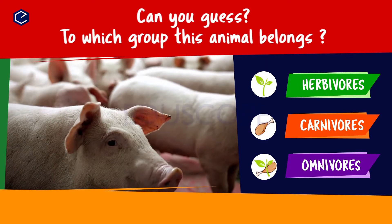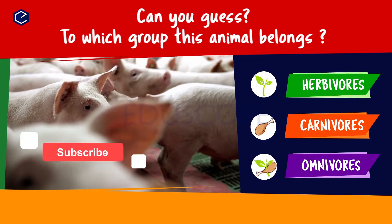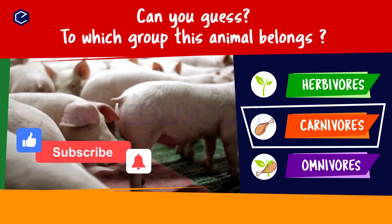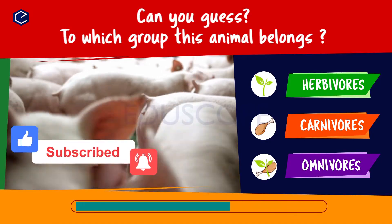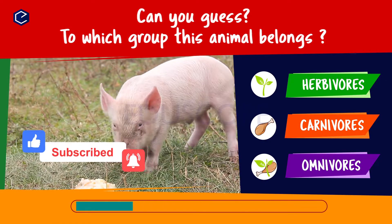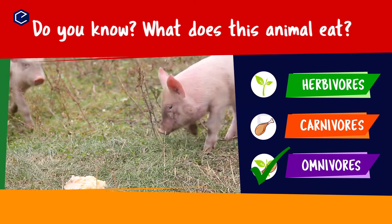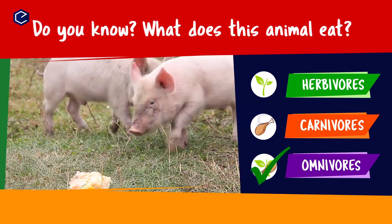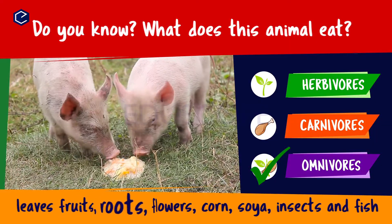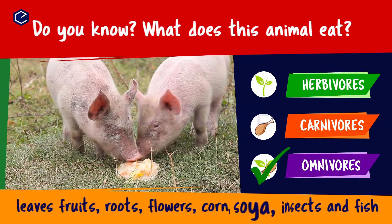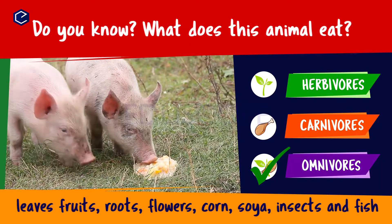Can you guess to which group this animal belongs? Herbivores, carnivores, omnivores. Do you know what this animal eats? A pig eats leaves, fruits, roots, flowers, corn, soya, insects and fish. So pig is an omnivore.